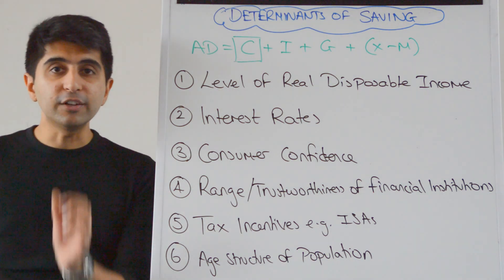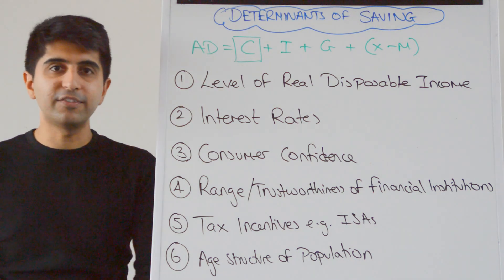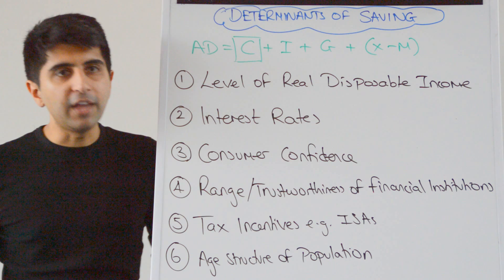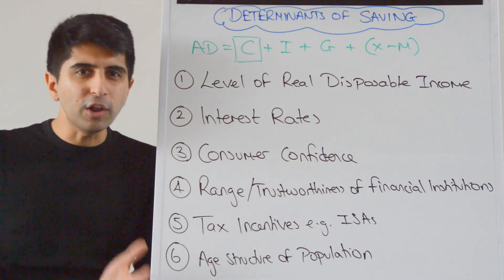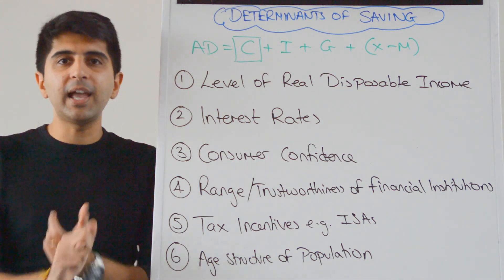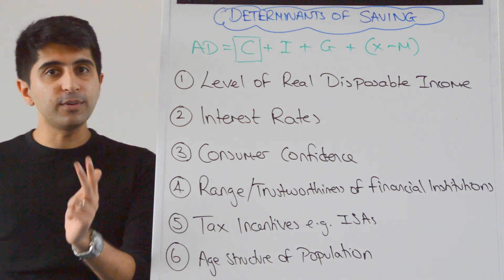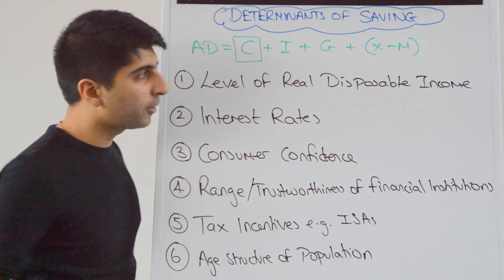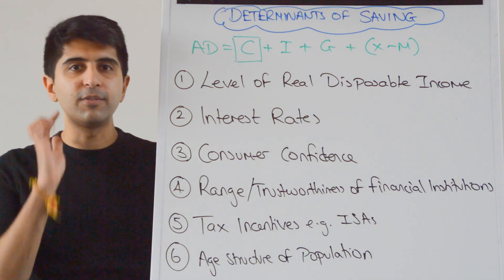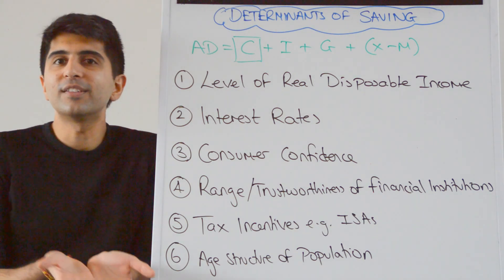Well the level of real disposable income. Of course that can affect saving. If incomes rise, we don't spend all of our money. So if incomes rise, yes consumption can increase but saving can increase too. So the level of real disposable income can definitely affect the level of saving. Without income you can't save, can you?